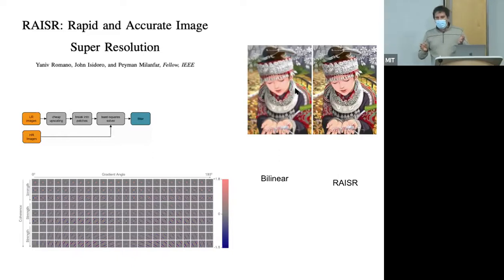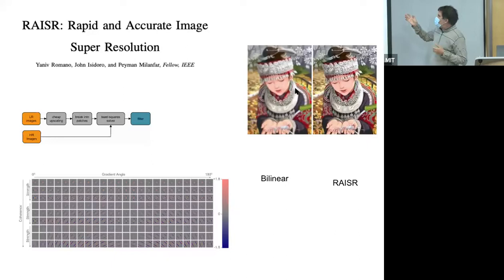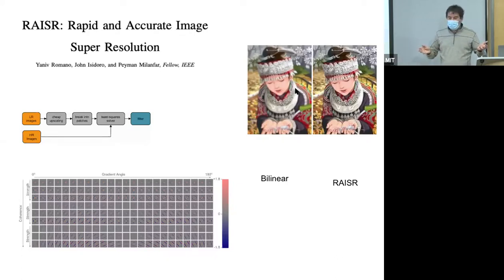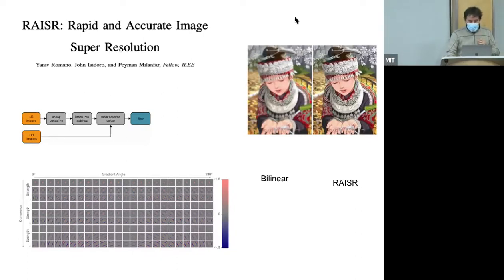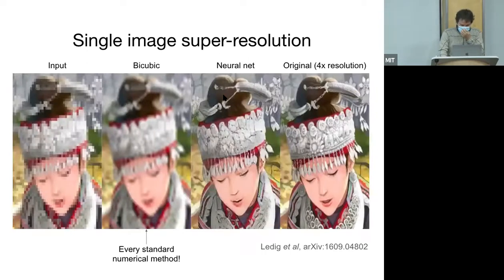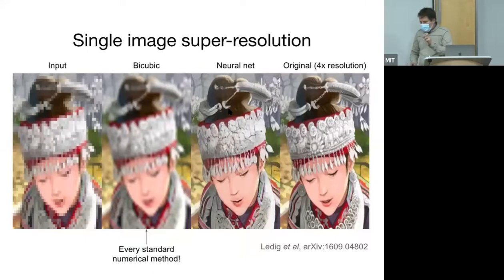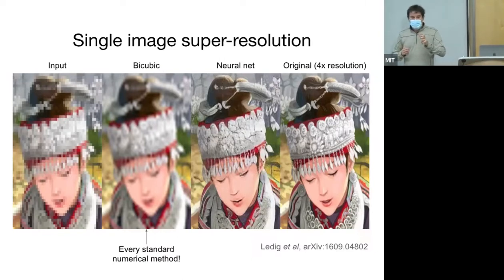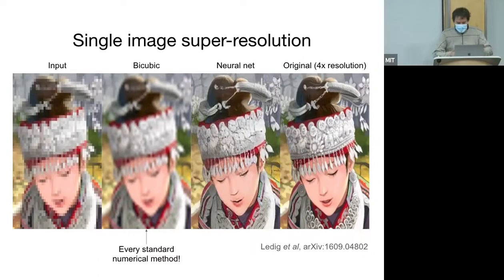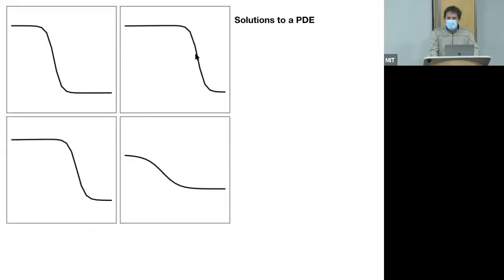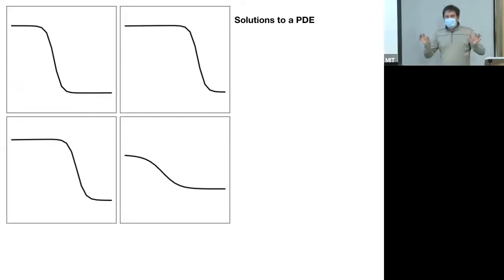When Peyman showed me RAISR, I thought it would be much easier to apply this idea to PDEs. Consumer images are hard—the space of images of the world is vast. But for the Navier-Stokes equations, as complicated as they are, the solution manifold is finite dimensional. So you should be able to parameterize it more efficiently. The method I'll describe today uses neural networks rather than RAISR's filter banks, which is more convenient for experimentation.